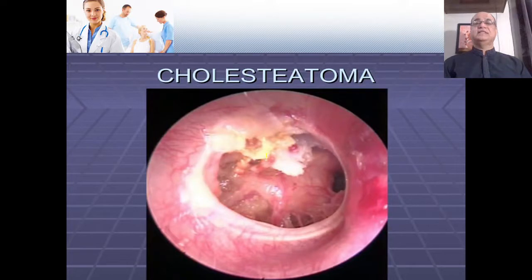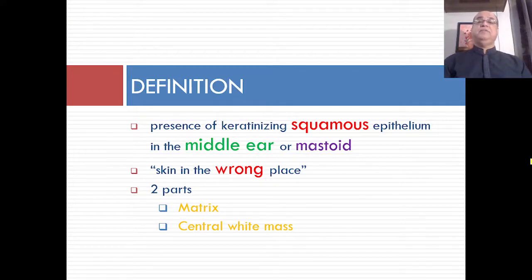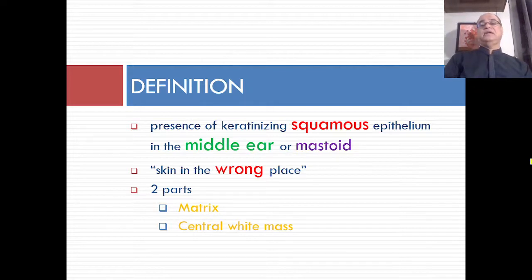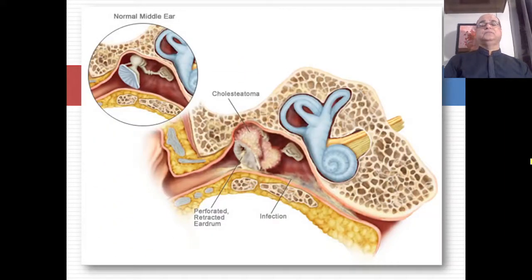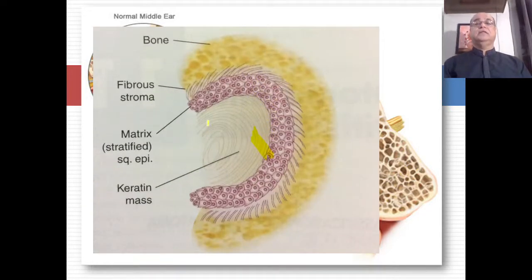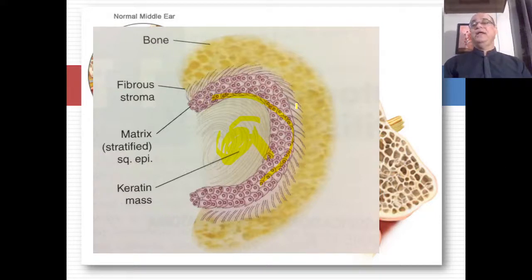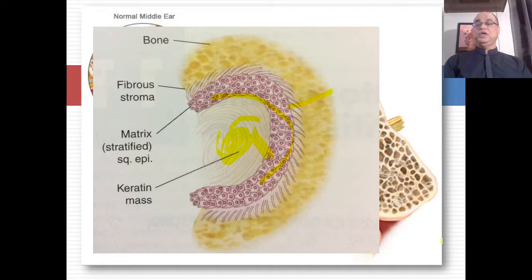Whitish flakes of cholesteatoma may be visible — this is the presence of keratinizing squamous epithelium in the middle ear or mastoid, sometimes called 'skin in the wrong place.' It has two parts: the matrix and the central white mass which is keratin. Outside is bone, and gradually the cholesteatoma expands at the expense of this underlying bone, going beyond the bony confines of the middle ear cleft.